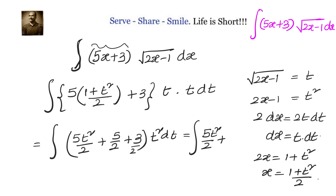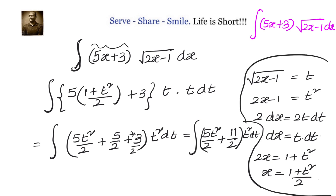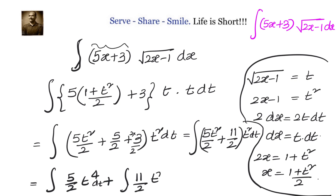Multiplying numerator and denominator by 2, we combine 5/2 + 3 to get 5 + 6 = 11, so that term becomes 11/2. The integral is now the integral of (5t²/2 + 11/2) times t squared dt.